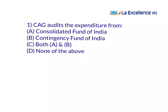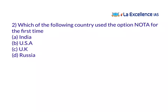Today's questions: first, the CAG audits expenditure from — option A: Consolidated Fund of India, option B: Contingency Fund of India, option C: both A and B, option D: none of the above. Try to answer. Second question: which country used the NOTA option for the first time? We'll see the explanation in the next video.